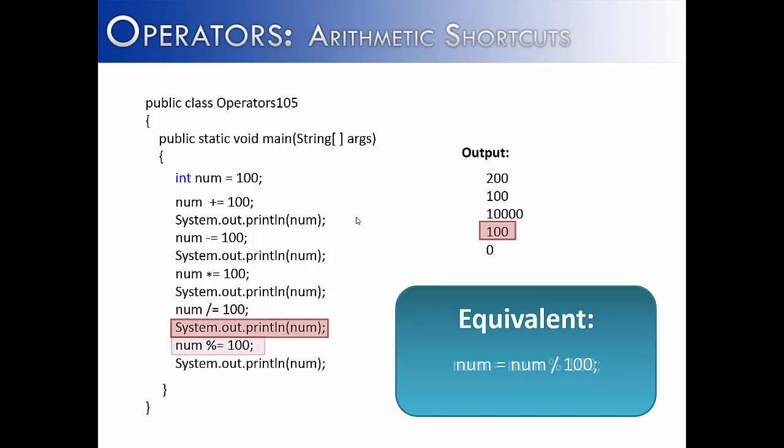And lastly, we would use the mod equals, which is going to find the remainder. And if we took 100 and modestly divided it by 100, it would divide one time with a remainder of zero. And that's why we see a zero in the output over there. And also, the equivalent would be num equals num modestly divided by 100.